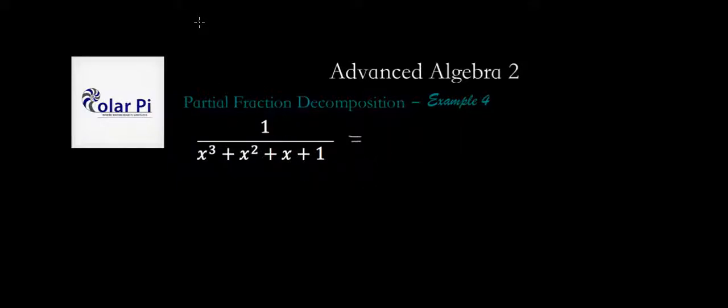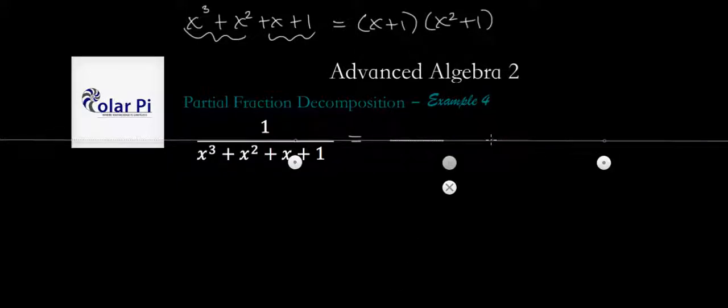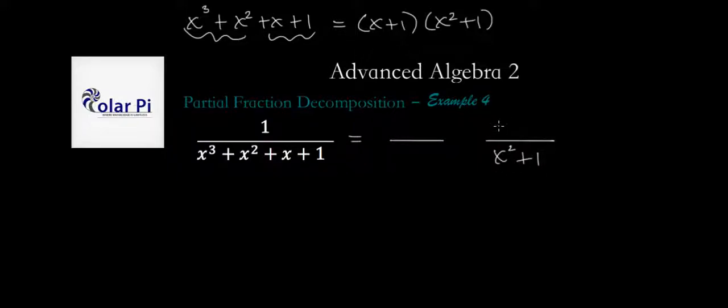When we factor x cubed plus x squared plus x plus one, and you can factor by grouping, we get x plus one times x squared plus one. We know that x squared plus one cannot be factored anymore. So that means this time that one of our two rational expressions will have to have a denominator that is quadratic. And what's new is that when the denominator is quadratic, the numerator must assume linear form. So the numerator must assume linear form when the denominator is quadratic.